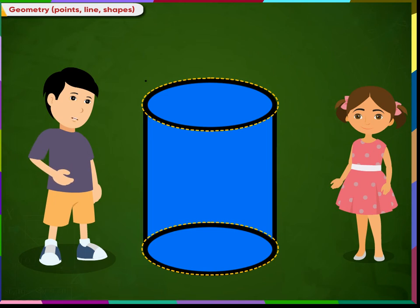You can observe this shape does not have any corner. It has two circular edges or curved edges.